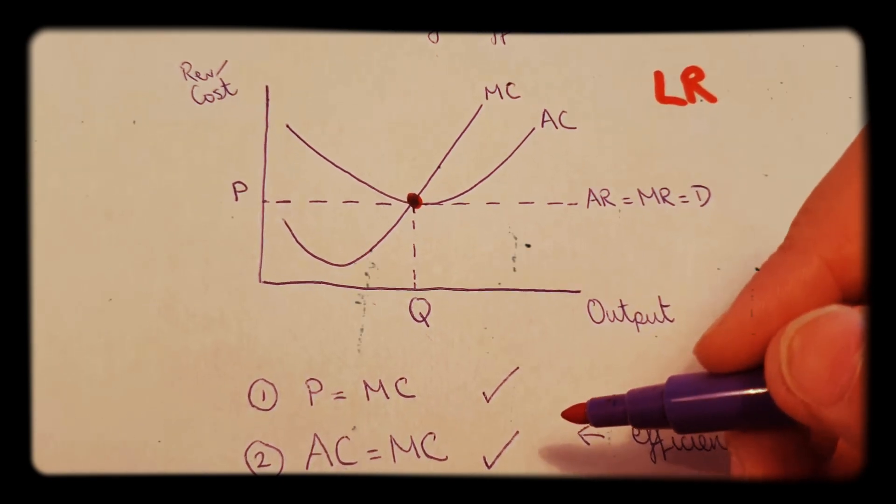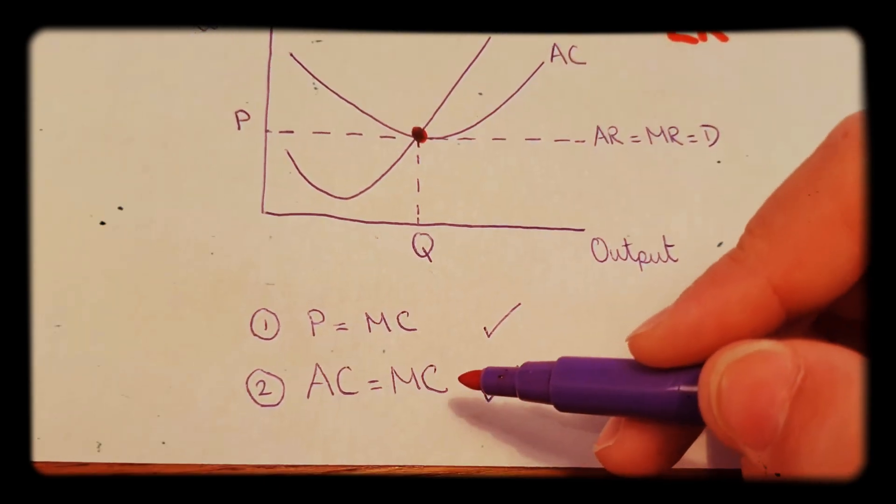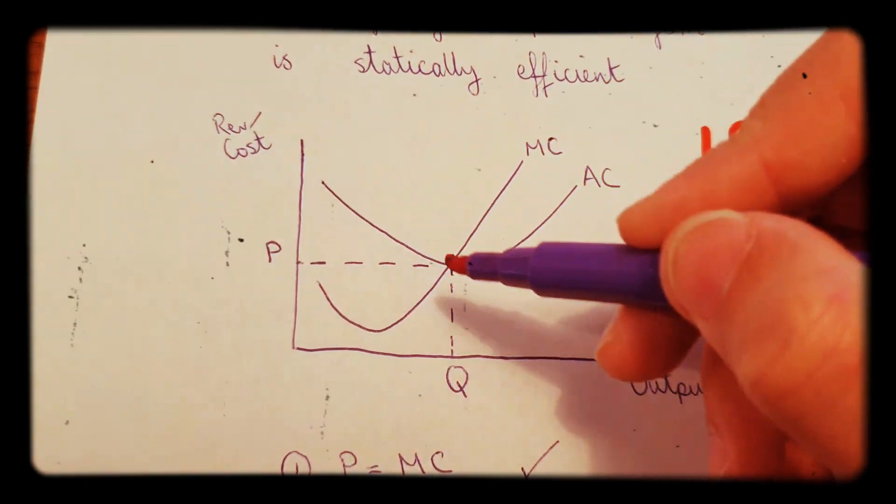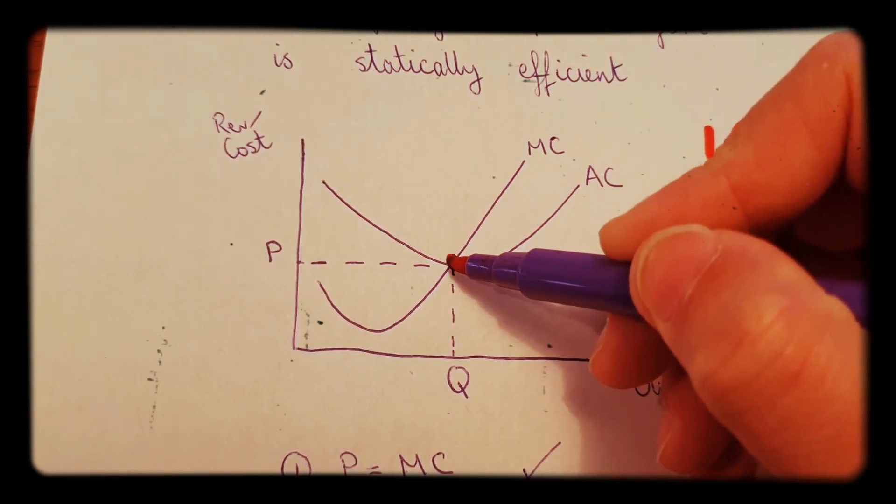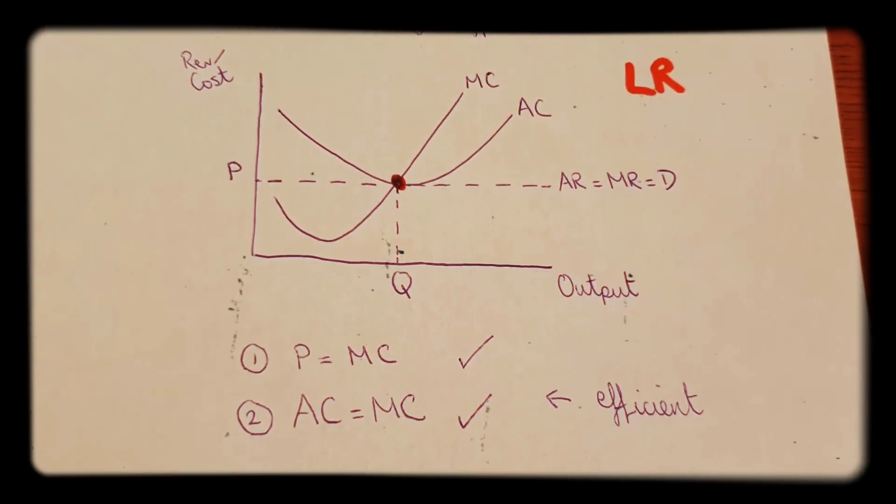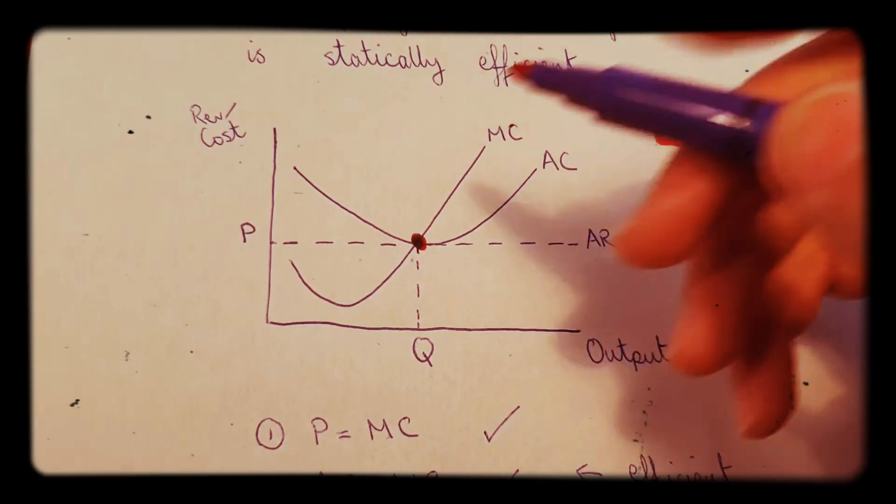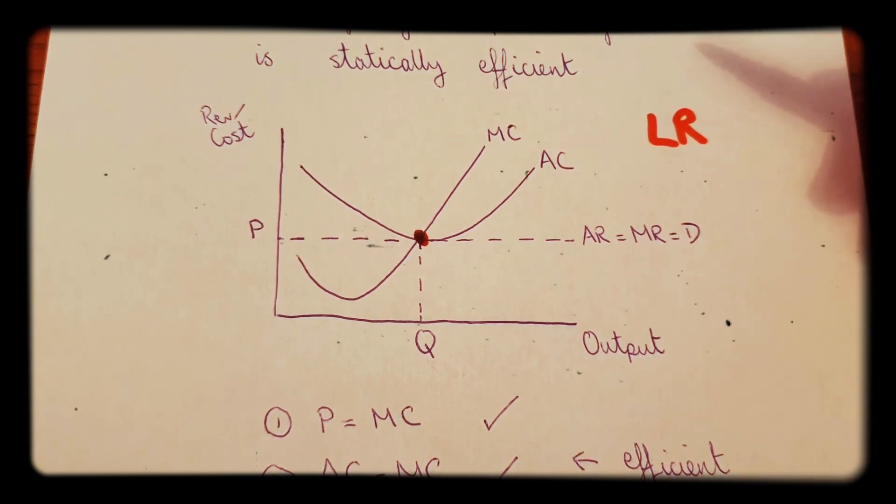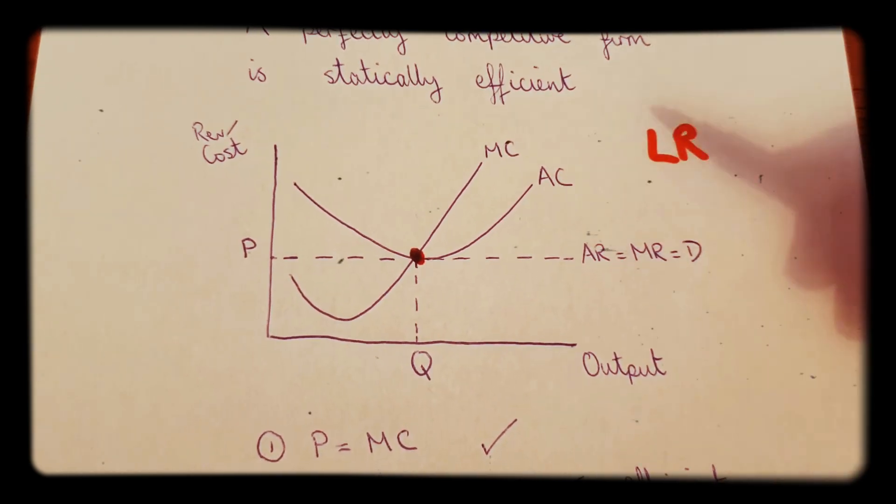And for productive efficiency, we need AC to be equal to MC. So producing at the lowest point of the AC curve, AC equals MC right there. Yes, that's also efficient. Okay, so in a perfectly competitive market, we have static efficiency.